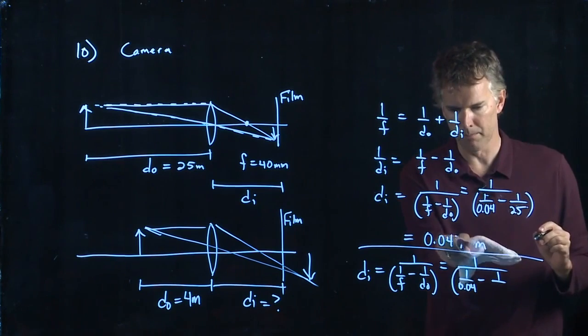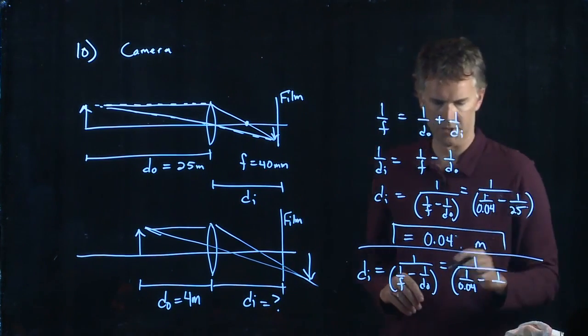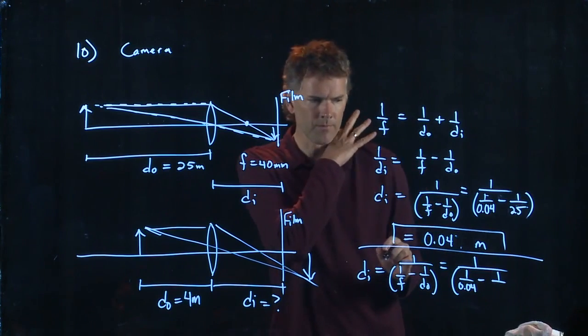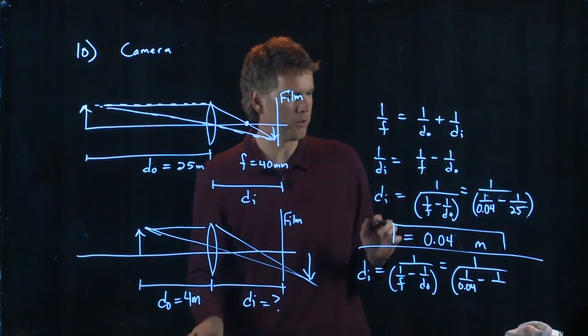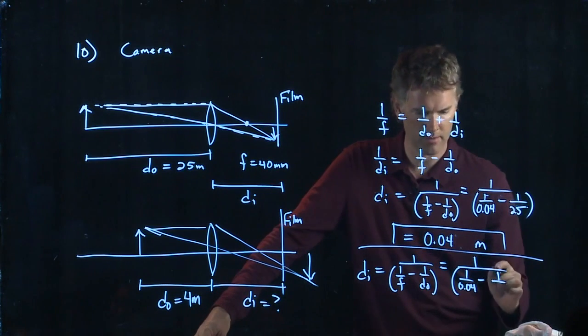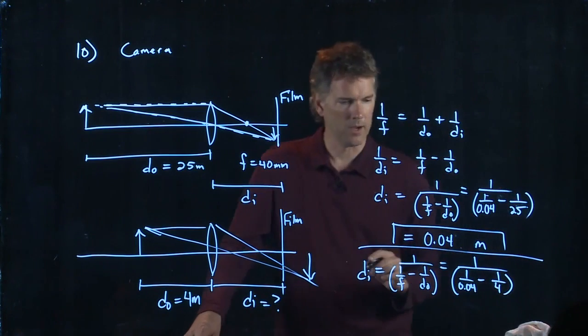In which case, this number is going to be basically 0.4. Double check me on that one. There might be one more digit after it, but it's basically 0.04.